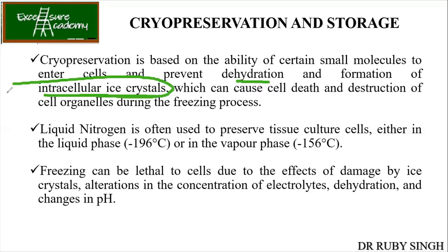This is the important part — because what happens is when you keep anything inside the freezer, these samples are going to have water in them. The water inside the sample gets frozen. Like our green peas, for example — they become very brittle and very hard once stored in freezer conditions. But if we keep our cells like that, the cells will also get frozen. The problem is that if inside the cell — whether bacterial or eukaryotic — any ice crystal forms, all the enzymes will get damaged.